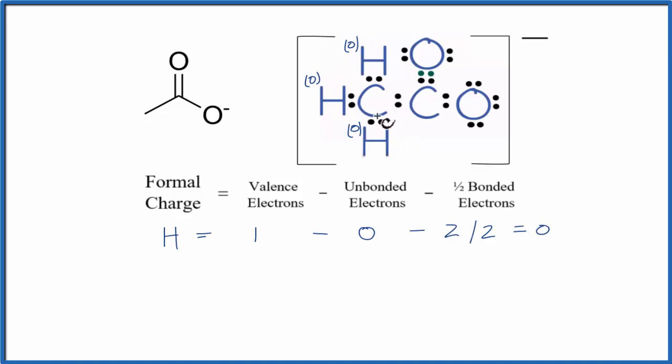Next, let's do this first carbon right here. Carbon on the periodic table, group 14. We subtract unbonded electrons. All these electrons around the carbon are involved in chemical bonds. And then one half of the bonded: two, four, six, eight. Four minus zero minus four, that equals zero. So, the formal charge on this carbon is zero.